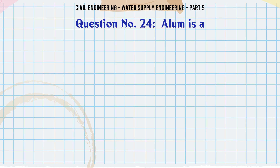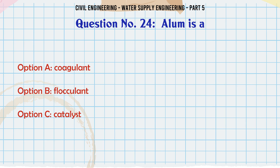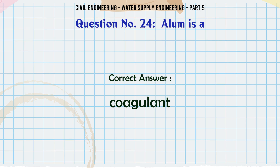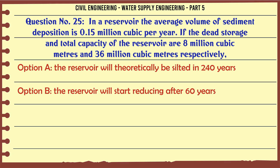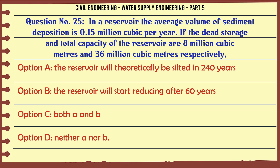Alum is: A. A coagulant, B. A flocculant, C. A catalyst, D. A disinfectant. The correct answer is Coagulant.